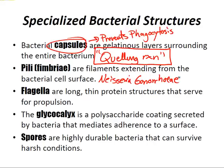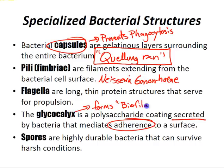Bacteria also have flagella — long thin protein structures that serve for propulsion. Flagellar proteins, like capsular and cell wall proteins, can be used to identify bacteria. The glycocalyx is a polysaccharide coating secreted by bacteria that mediates adherence to a surface. This is what forms biofilms, which often form on foreign objects such as heart valves and protect bacteria from antibiotics and the immune system.